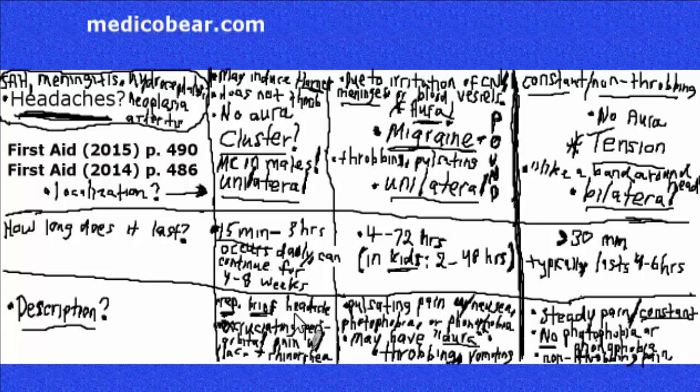For the tension headaches, we can use analgesics, NSAIDs, acetaminophen. And for chronic pain from the tension headache, you can use amitriptyline. This is a really high yield topic. I hope this was informative and that it helps.